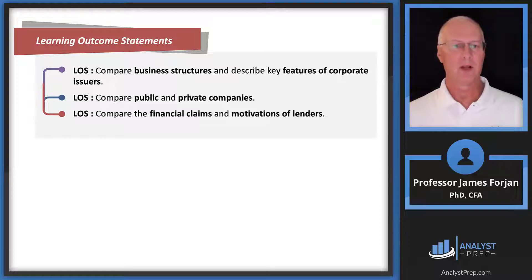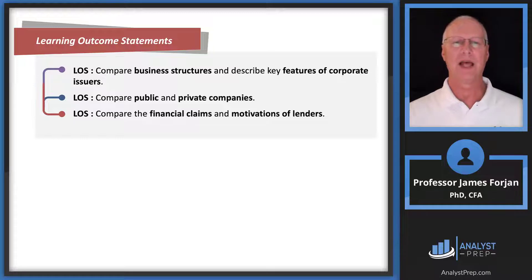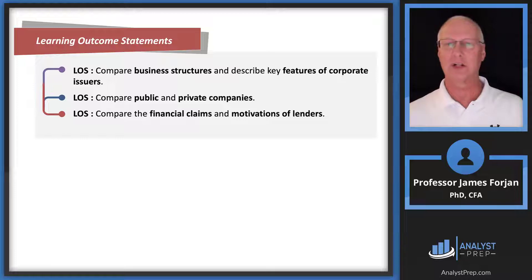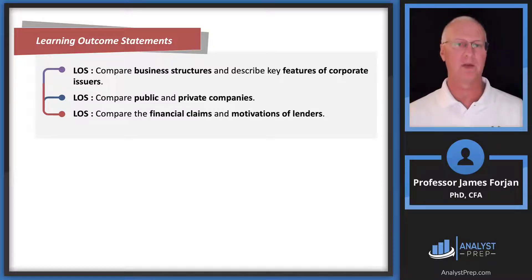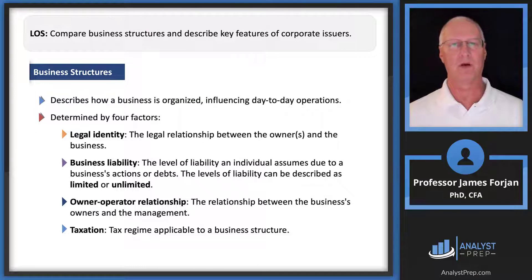The three LOSs are: compare business structures, compare private and public companies, and compare the financial claims and motivation of lenders. That third one is clearly the right-hand side of the balance sheet, and as we work through the second and first LOSs, we'll see they also have elements of the right-hand side of the balance sheet. Let's start with that first LOS: business structures.